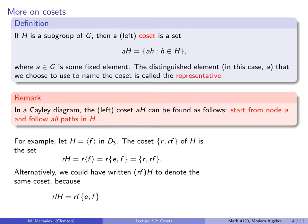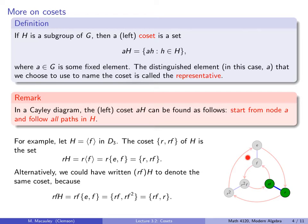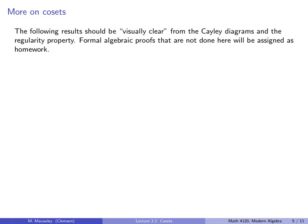Alternatively, we could have written RF·H to denote the same coset. Because RF·H is just RF times this set, which gives RF times E and RF times F, which is RF². Since F² is the identity, that's the same set as before. So here's the picture: the subgroup H is this set, and the identical copy is the coset RH, or equivalently the coset RF·H.